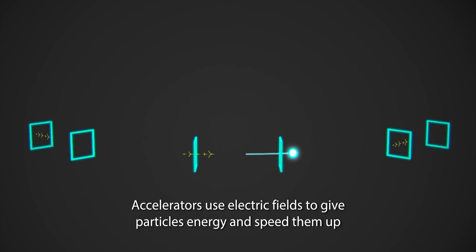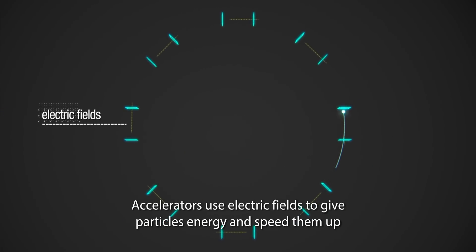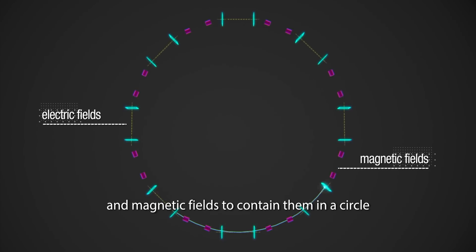Accelerators use electric fields to give particles energy and speed them up, and magnetic fields to contain them in a circle.